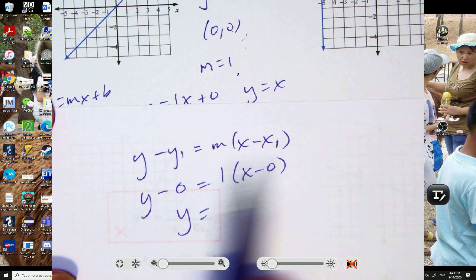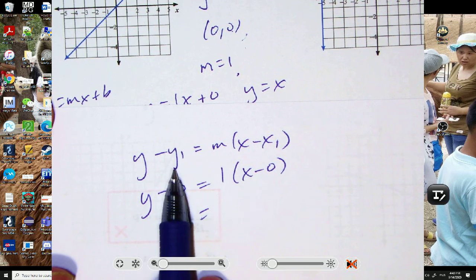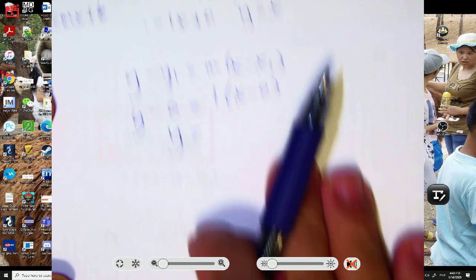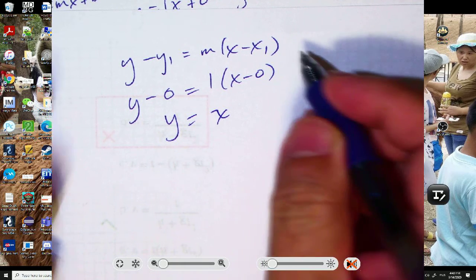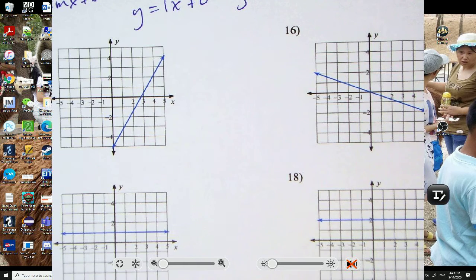So that's the point I'm going to use for the x1, y1. So both are 0 and m is 1. Y minus 0 is y. 1 times that is x. And that's the answer. Let's look at number 19.